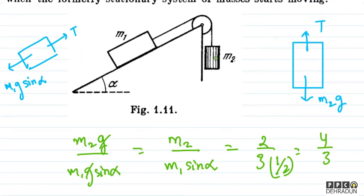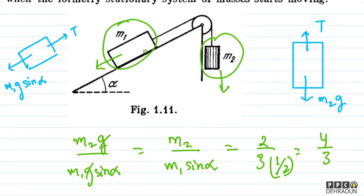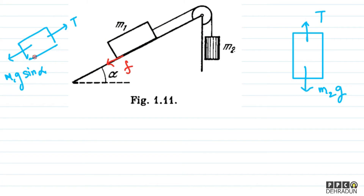So it is clear that m2g — the force of gravity on m2 — is greater compared to the component of gravity pulling m1 down the incline. Therefore friction must act down the incline on m1 to oppose the tendency of m1 moving up the incline. Now we can complete the free body diagram for m1: along the incline we have tension upward, m1g·sin(alpha) downward, and friction acting down the incline.